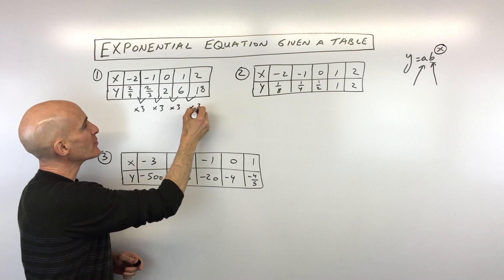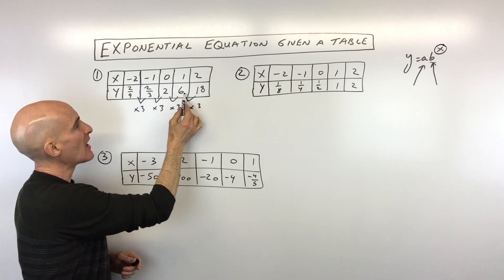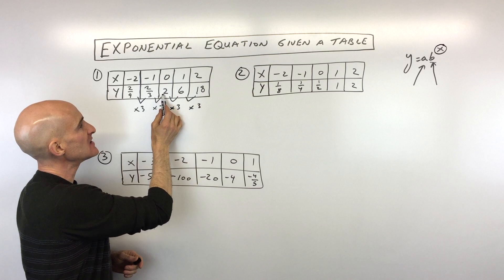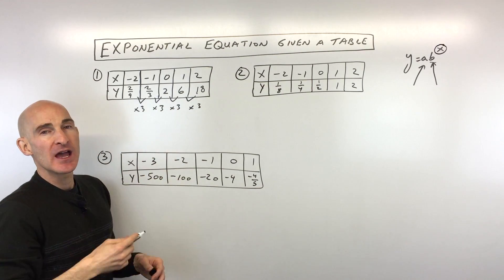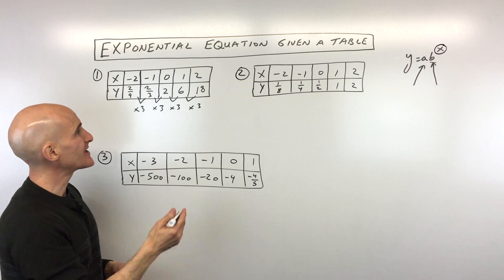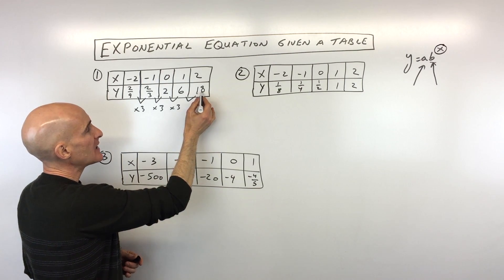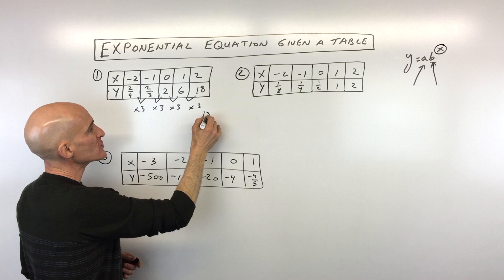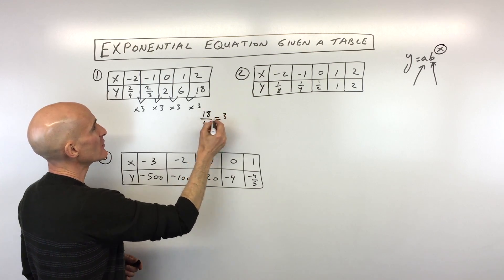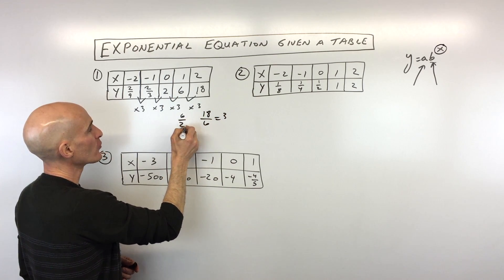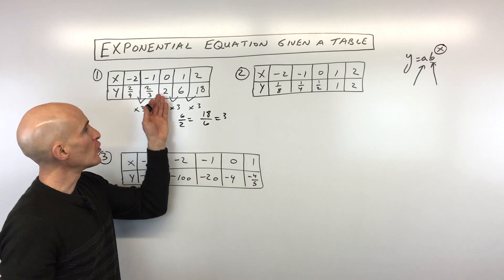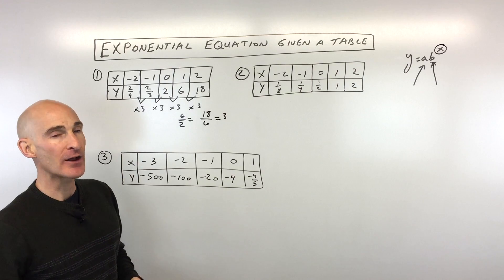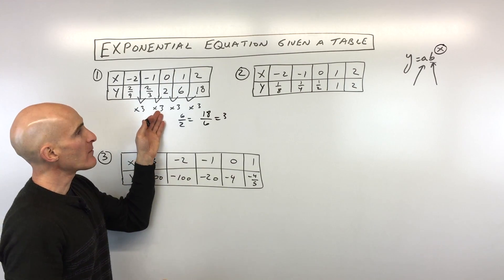If it's not obvious at first, what you can do is look a little bit further down the line. Here you can see six times three is eighteen, two times three is six, and so on. Just double-check that pattern. Another way to identify it is to take any term and divide it by the one before it. So if you take eighteen divided by six, you're getting three. Six divided by the term before it, you're getting three. That's what I normally do—go a little bit further down the line if I can't identify it right away.